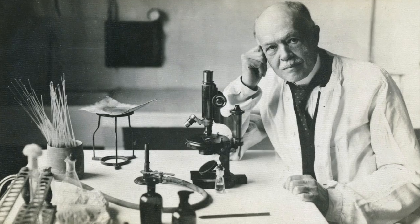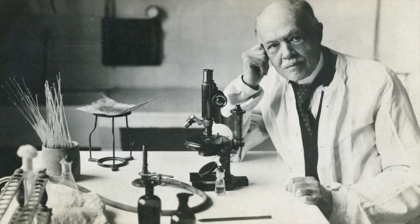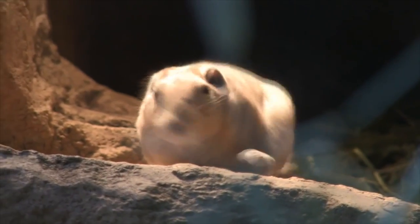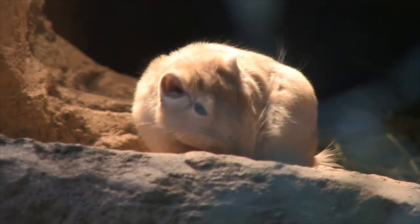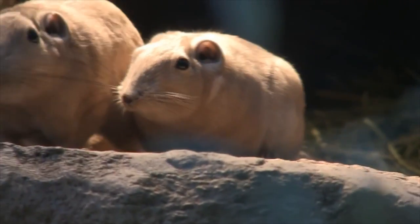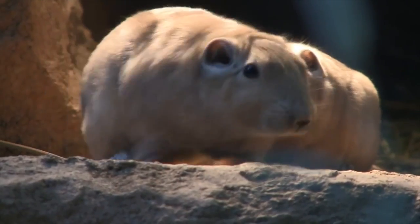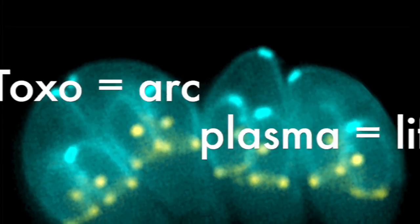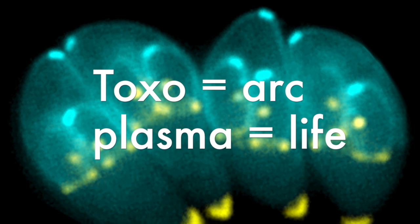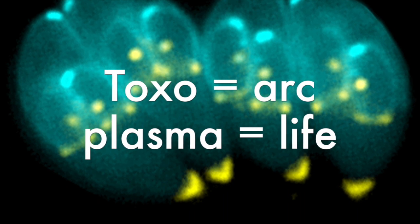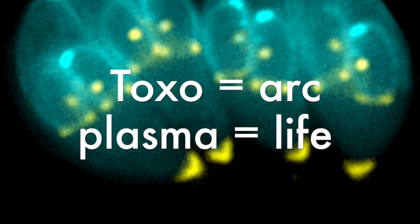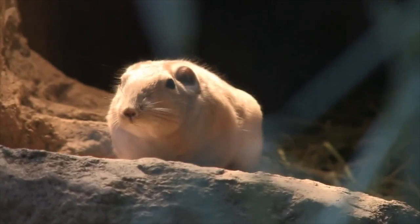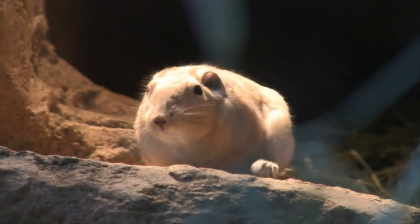Toxoplasma was discovered in 1908 by French researchers Nicole and Manseau as they were studying muscle tissues of the gondii, a rodent indigenous to southern Africa. They discovered a unique protozoan and realized it was a new discovery. They named it Toxoplasma gondii — toxo meaning arc, plasma meaning life, and gondii referring to the animal in which it was found.